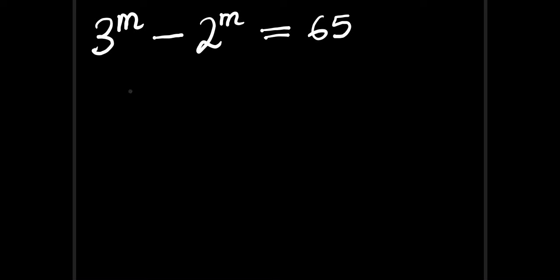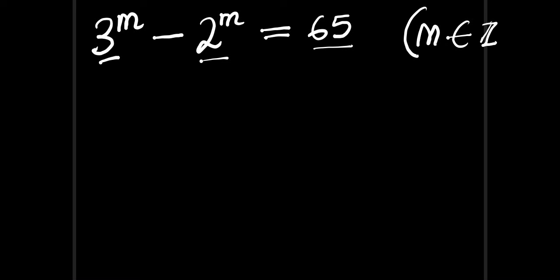Hello, in this video we are going to solve this interesting exponential equation. We have 3 to the power of m minus 2 to the power of m equals 65, and we also have that m is an integer. What we are going to do is find the value of m that satisfies this equation.